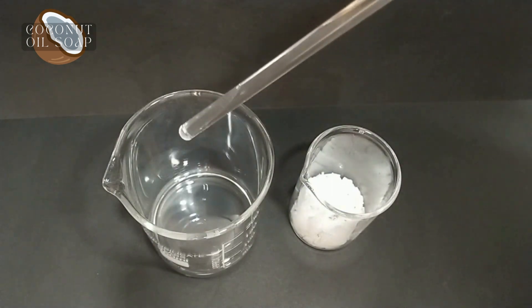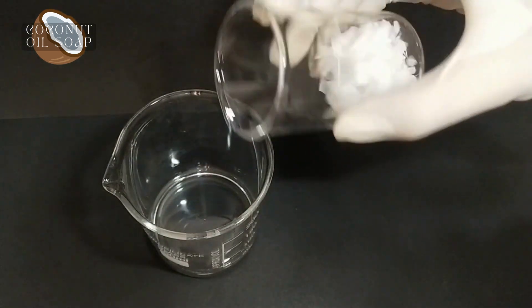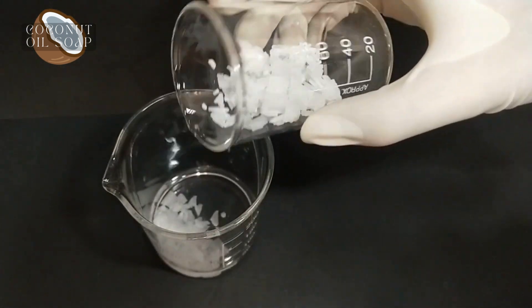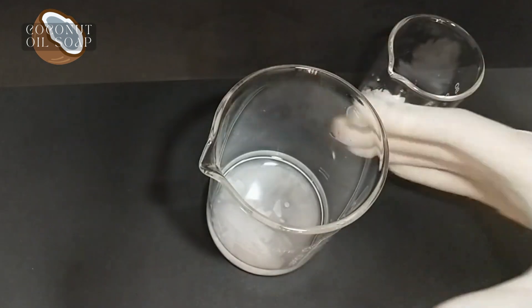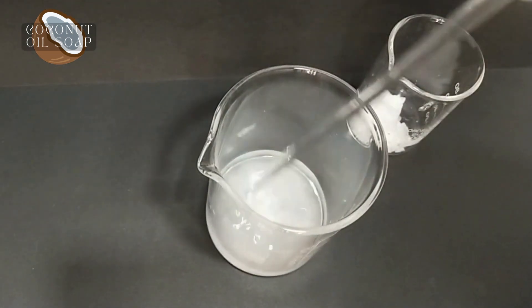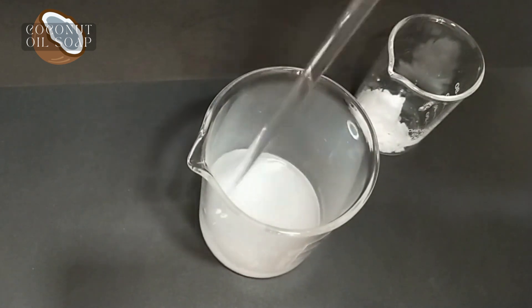Now add caustic soda slowly into distilled water with continuously stirring. And this reaction is exothermic, so heat will be released, so temperature of solution as well as beaker will increase. So be gentle with this process.